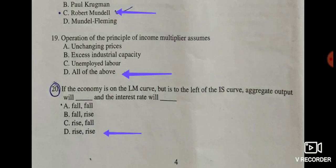Question twenty: if the economy is on the LM curve but is to the left of the IS curve, aggregate output will and interest rate will — both aggregate income or output and the rate of interest will rise. Aggregate output will rise and interest rate will rise. The correct answer is option D: rise and rise.